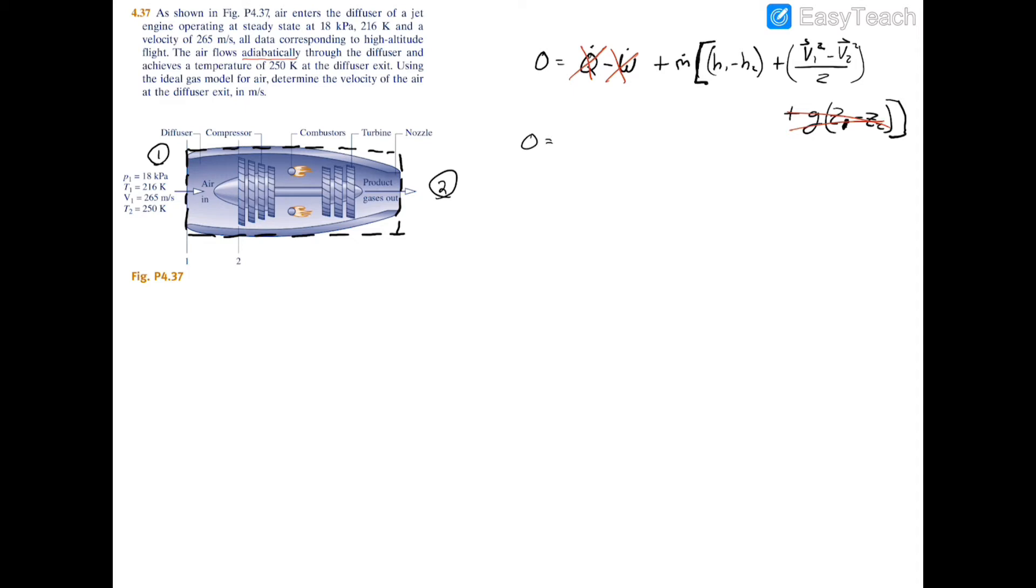So now we're left with zero equals the mass flow rate times h1 minus h2 plus the kinetic energy of v1 squared minus v2 squared divided by two.